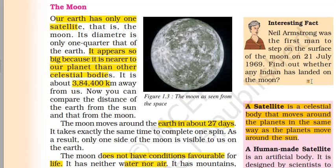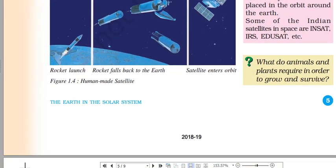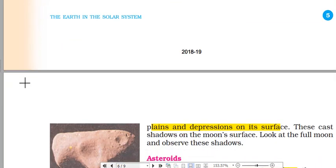The Earth has only one natural satellite — the moon. Its diameter is one-quarter of the Earth's. It appears so big because it is very near to us, only 384,400 km away. The moon moves around the Earth and takes about 27 days to complete one revolution. The moon does not have conditions favorable for life — there is no water available. However, it has different surface features like mountains and depressions.